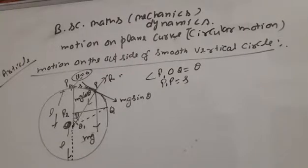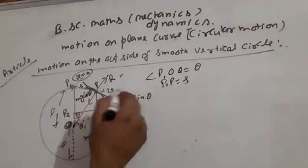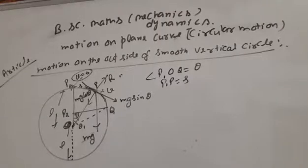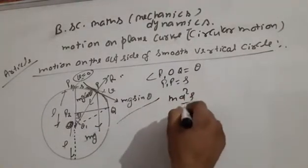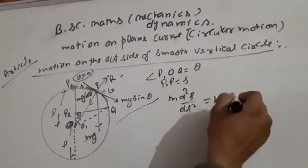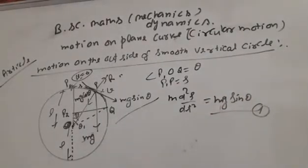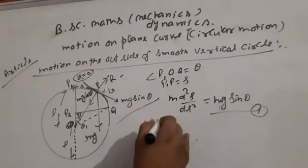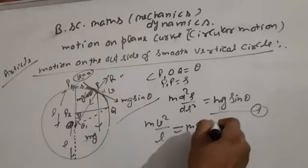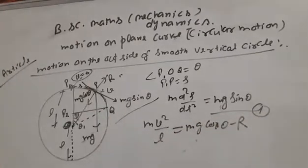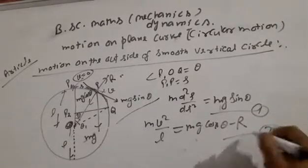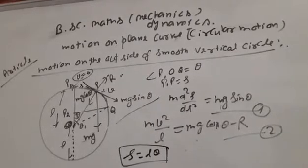The reaction R acts vertically. Let v be the velocity of the particle at point P. The equation of motion gives: m·d²s/dt² = Mg·sinθ — equation (1). And for the normal direction: mv²/L = Mg·cosθ − R — equation (2).